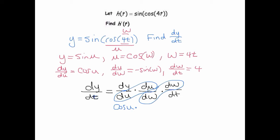du/dw is equal to negative sine of w, and dw/dt is equal to four. And now all we need to do is go change the u's and w's to be what they are in terms of t.